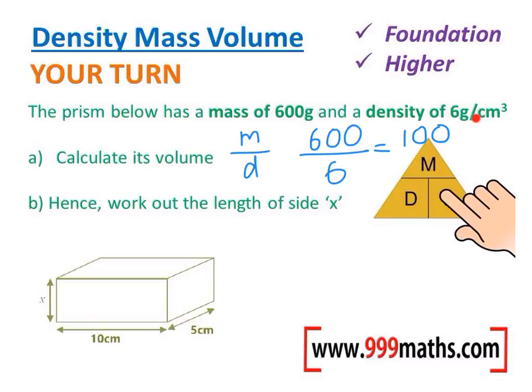Okay, hence work out the length of side X. Well, if the volume of this prism below is 100 centimeters cubed, that would mean as in the previous question that this height times this width times this depth will have to multiply to make 100. So X times by 10 times by 5 would be the volume which would equal 100 because we've just worked out that the volume is 100. Well we know that 10 times 5 is 50, so